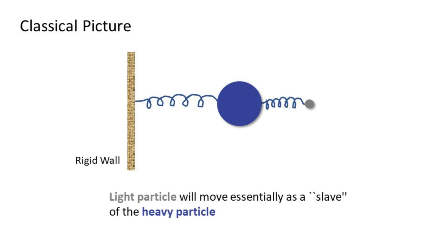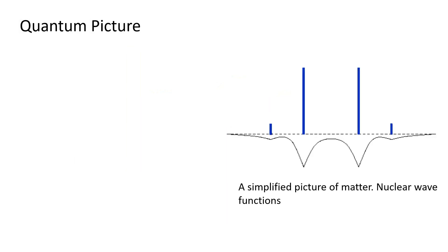It will move rapidly in response to the heavy particle motion. So if the heavy particle moves a little bit, then the light particle will move significantly. If you look at the quantum picture and try to solve the time-independent Schrodinger equation for these electrons and nuclei, we can find that the wave function will be very diffuse and delocalized for light particles like electrons.